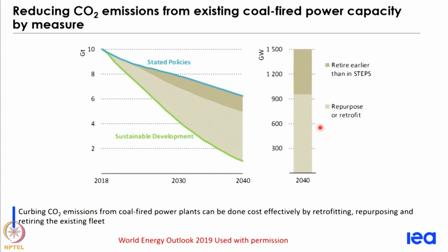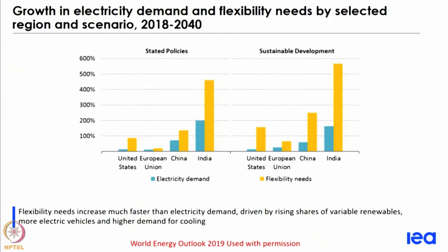The coal sector will be in deep transition and many existing plants would have to be phased out or modified. Looking at electricity demand, there is a significant growth projected, and in the stated policy scenario it will go to about 200 percent of its existing value. In the sustainable development scenario, because of efficiency, growth will be lower but there is still a reasonable amount of growth. With a higher share of renewables, there will be a need for flexibility in the system.